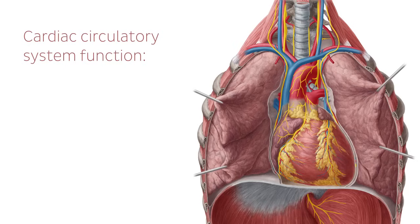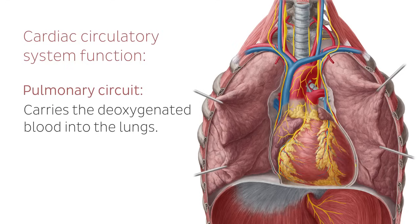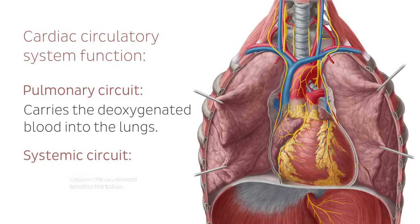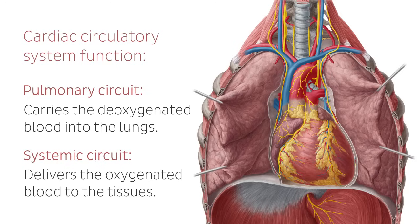The cardiac circulatory system functions by providing the tissues of the body with oxygen and nutrients which are transported in the blood. The pulmonary circuit carries deoxygenated blood into the lungs, where the exchange of oxygen and carbon dioxide that the body has produced occurs before the blood returns back to the heart. The heart then pumps the newly oxygenated blood around the systemic circuit, delivering it to the tissues before collecting the deoxygenated blood and sending it back to the heart with unused nutrients and metabolic waste products. These extra substances within the blood filter into the liver for processing.